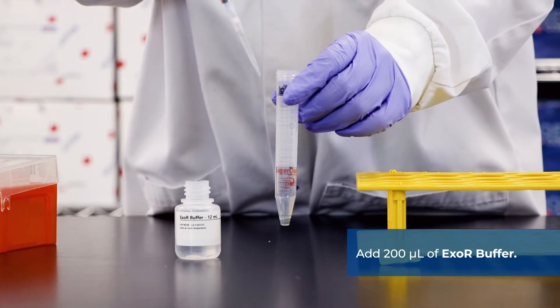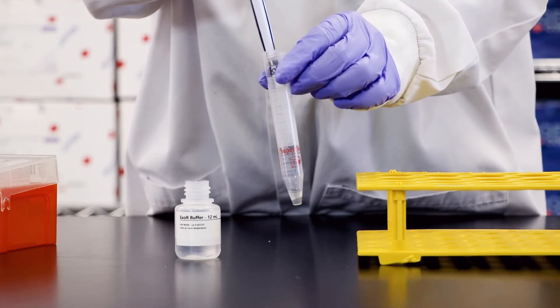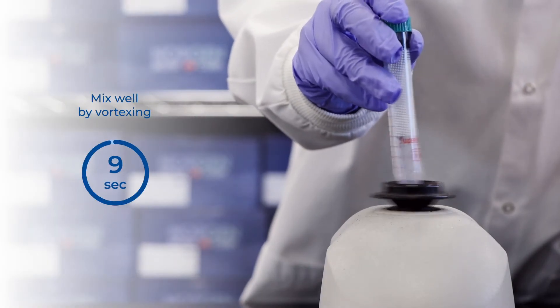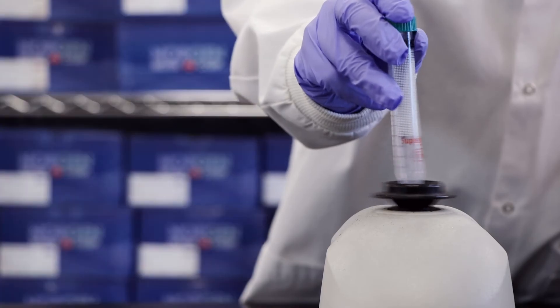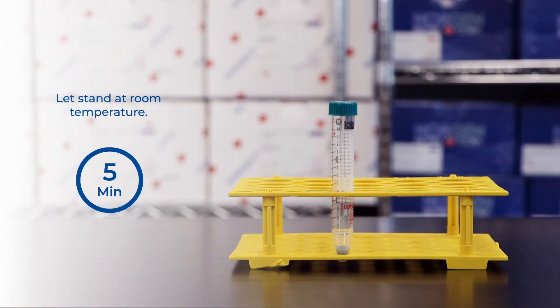Apply 200 microliters of XOR buffer to the slurry pellet. Mix well by vortexing for 10 seconds. Incubate the slurry pellet resuspended in the 200 microliters of XOR buffer at room temperature for 5 minutes.